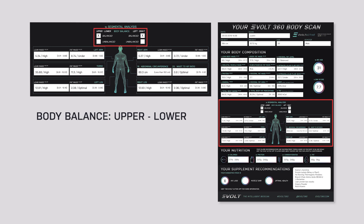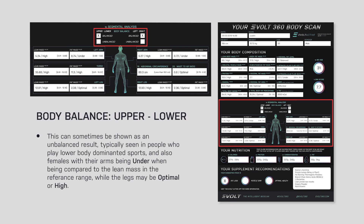When talking about upper and lower body balance, sometimes that can show as an unbalanced result. That's typically seen in people who play lower-body-dominated sports, or more commonly in females, where the arms may be under the reference range for lean mass while the legs are optimal or high. This isn't necessarily good or bad — it is goal-specific. If their goal is to get bigger arms and they're under, then obviously that's something to work on.